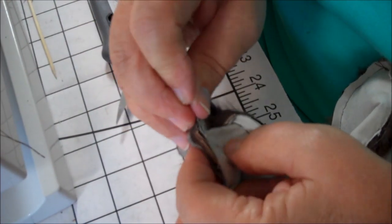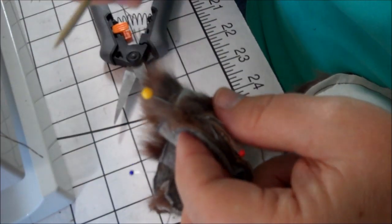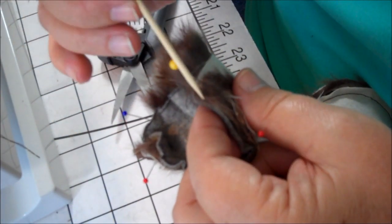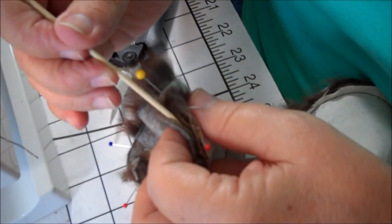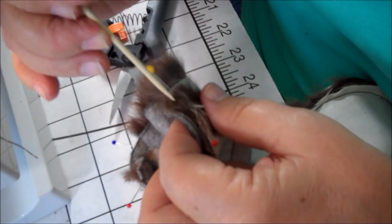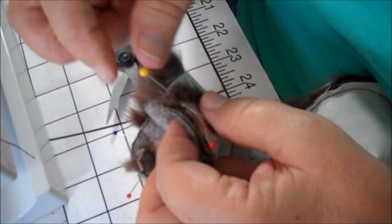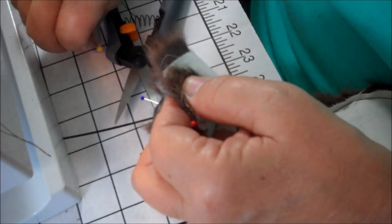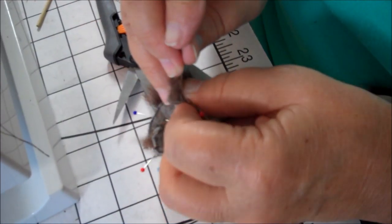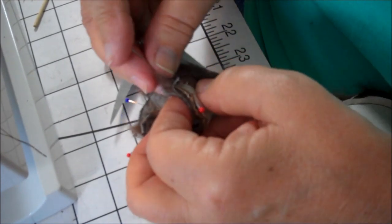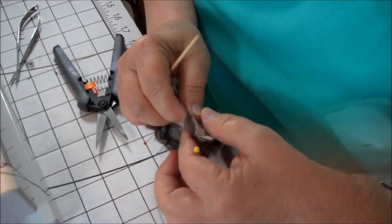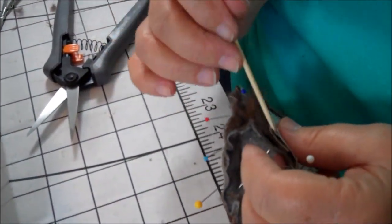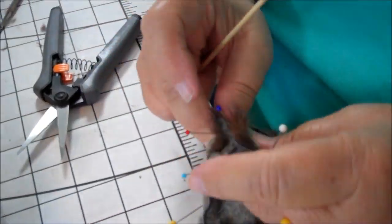You want to try to get this pad to fit in here as smoothly as possible and without any ripples, because once you stitch it down, you can't take it back up. You can just shove this fur in here any which way you want because when we're all finished, we're going to be combing this fur out so everything blends along the seam allowances.